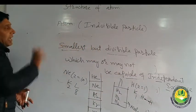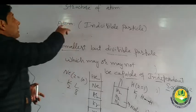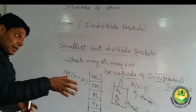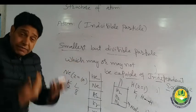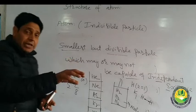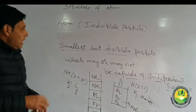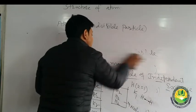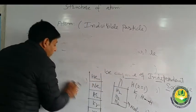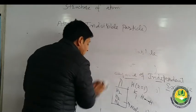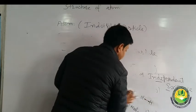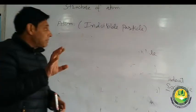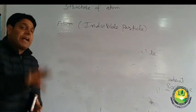So atom is the smallest but divisible particle of matter, which may or may not be capable of independent existence. Smallest means it does not participate in reactions; divisible because it contains so many particles. Now we are coming to the structure of atom — we have to study the actual model of atom.